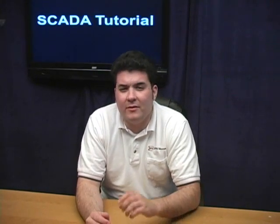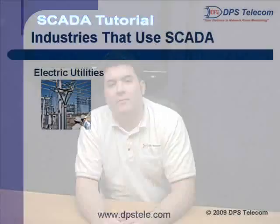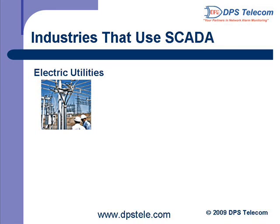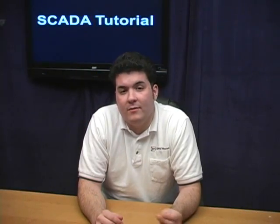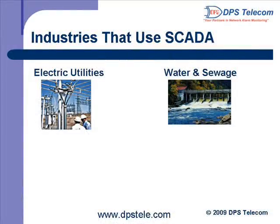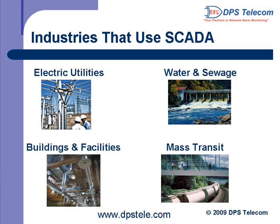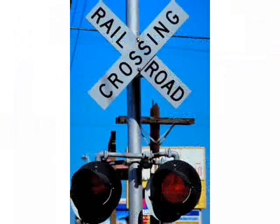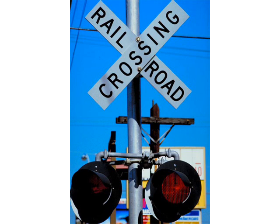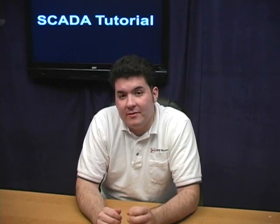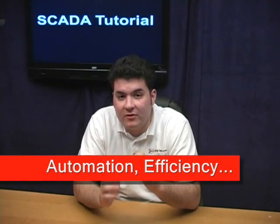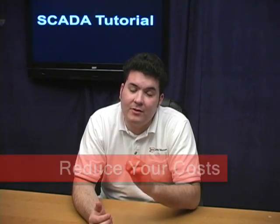Now let's look at the different industries that use SCADA. Electric utilities: power plants use SCADA to detect current flow and line voltage, monitor circuit breakers, and take sections of the power grid on and offline. Water utilities monitor and regulate water flow, reservoir levels, and pipe pressure. Building and facility managers use SCADA to control HVAC, refrigeration units, lighting, and building access systems. Mass transit authorities use it to regulate electricity to subways, trams, and trolley buses, and rail systems use it to automate traffic signals and control railroad crossing gates. SCADA is used in nearly every industry because automation increases efficiency and reduces costs.